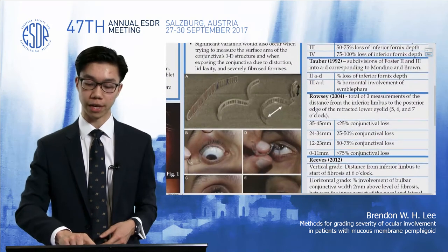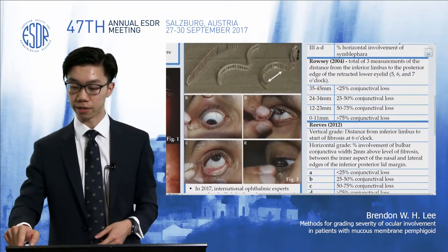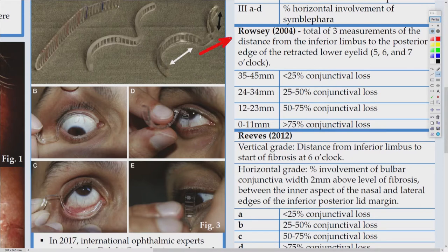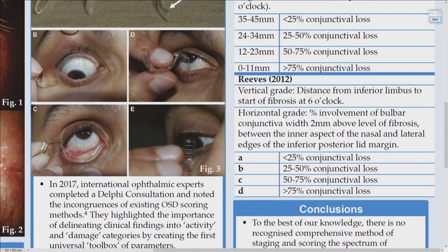Looking at newer systems, the first is the Rousey system, which measures the eye from three different points — the five, six, and seven o'clock positions — using a clear measurement in millimetres, giving a more accurate quantification of the area of involvement. This was then followed by Reeves in 2012, which included a vertical and horizontal grade, giving a much more comprehensive and accurate assessment.